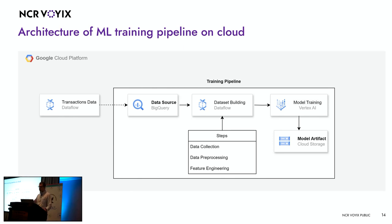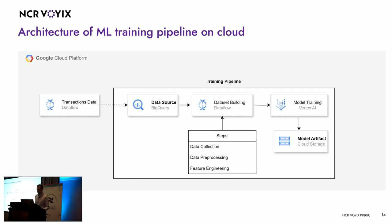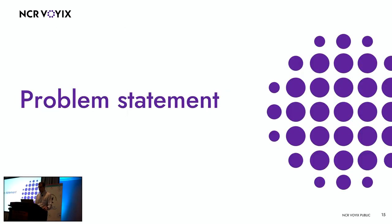There are also other types of pipelines — for example, batch inference pipelines, where you take the model and the data from BigQuery, perform the processing steps, and then infer the results, usually within Dataflow. Sometimes we use different services for other cases, which I'll cover a bit later.